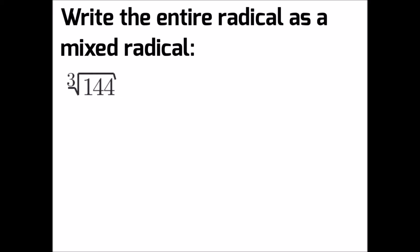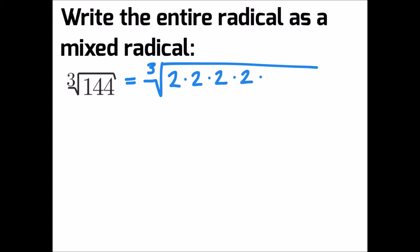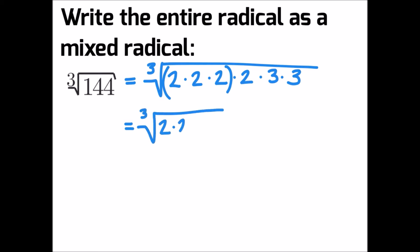The second example asks us to write the radical as a mixed radical for the cubed root of 144. The cubed root of 144 equals 2 times 2 times 2 times 2 times 3 times 3. Now since we're looking for the cubed root, we look at our prime factors and ask: are there any triplets — can we make a group of 3? In this example we can, so we're going to write the group of 3 in front of whatever is left over.